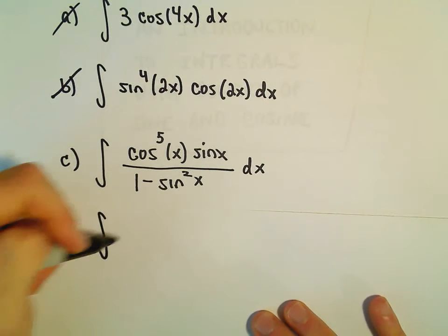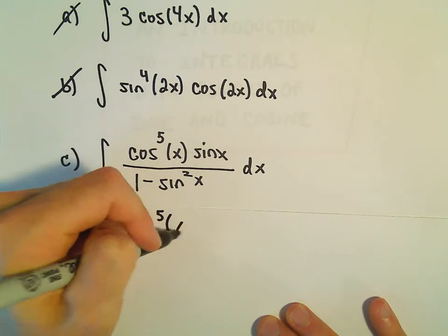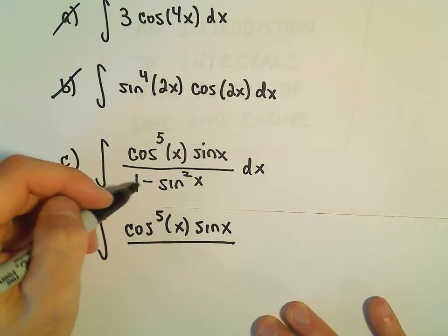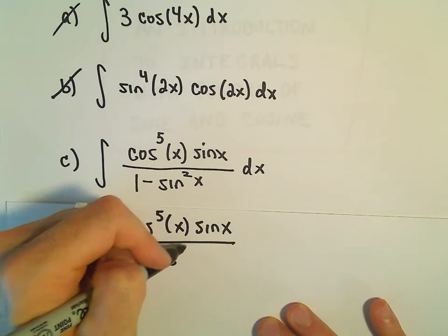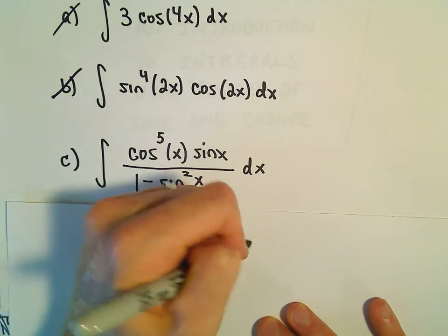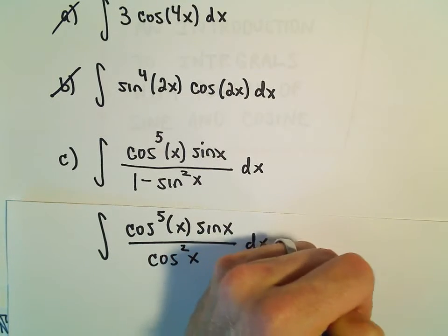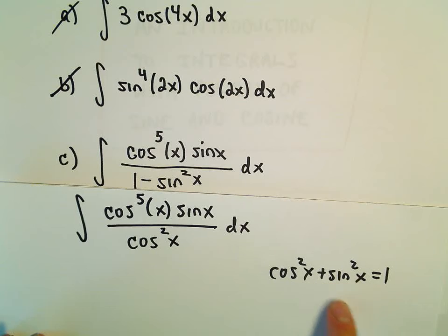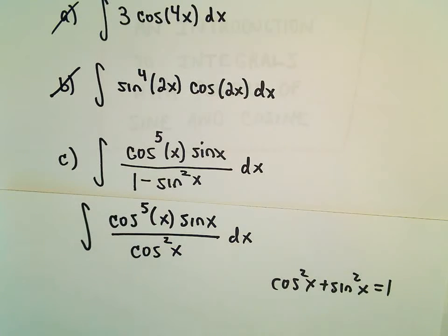I think first we can definitely use an identity to simplify this problem. Recall 1 minus sine squared — that's actually the same thing as cosine squared. Because remember, cosine squared x plus sine squared x equals 1. So if you subtract the sine squared over, we'll have 1 minus sine squared, which would be equal to cosine squared.